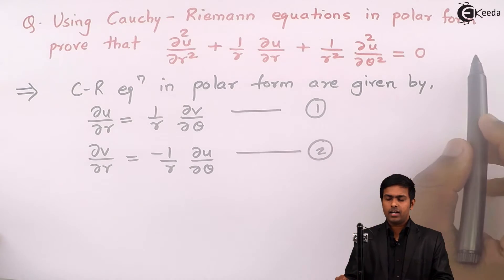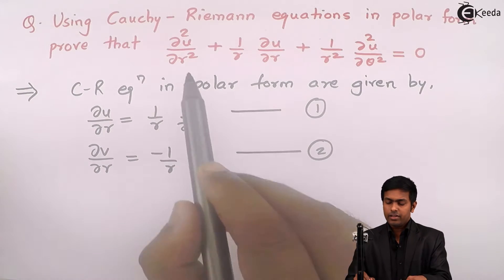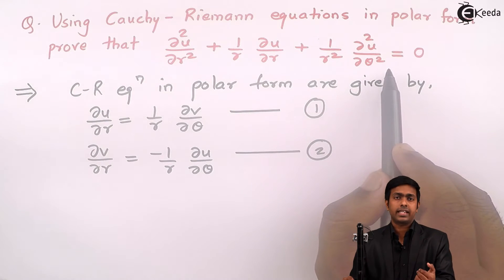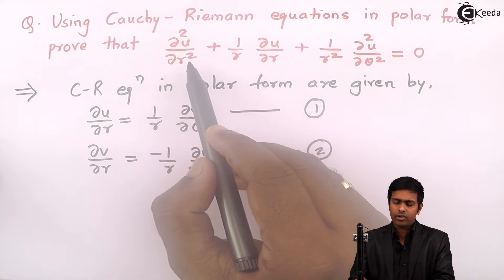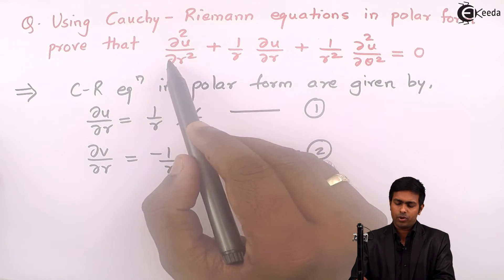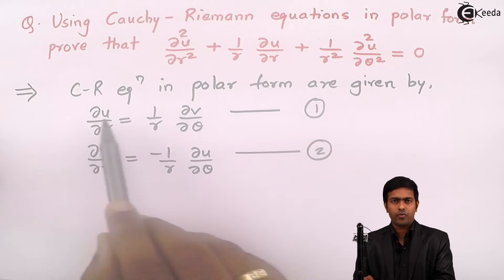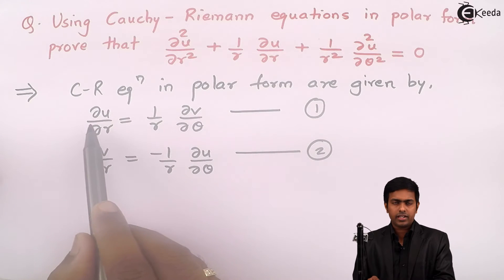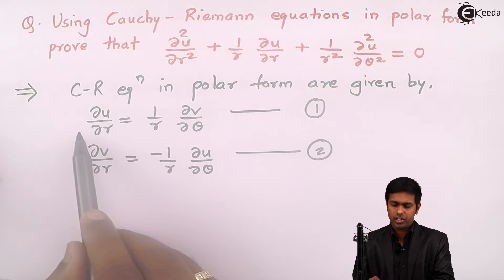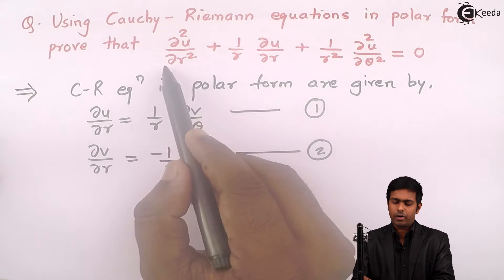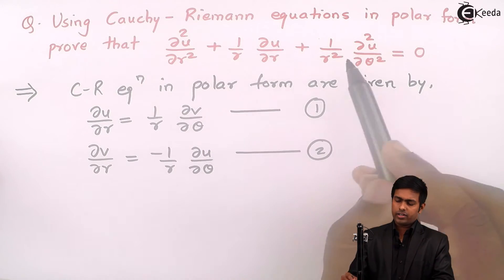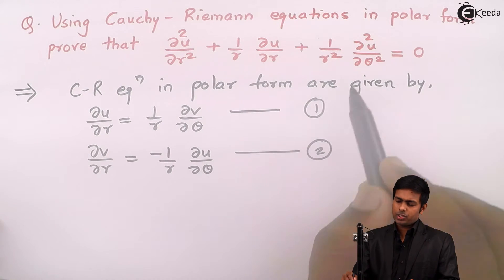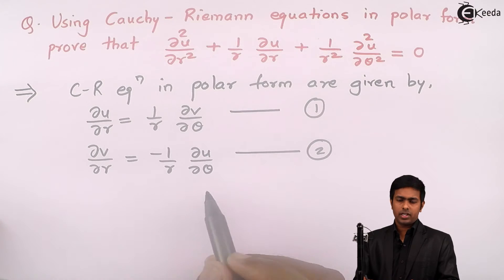Now to prove this result, if you look carefully, the first term and the last term are second-order derivative terms. To get the second-order derivative term ∂²u/∂r², we need to differentiate equation 1 with respect to r partially on both sides. Similarly, for the third term, we need to differentiate equation 2 with respect to θ on both sides. So let us start.